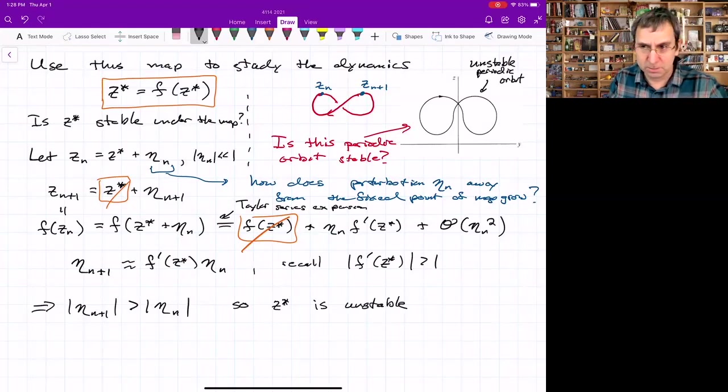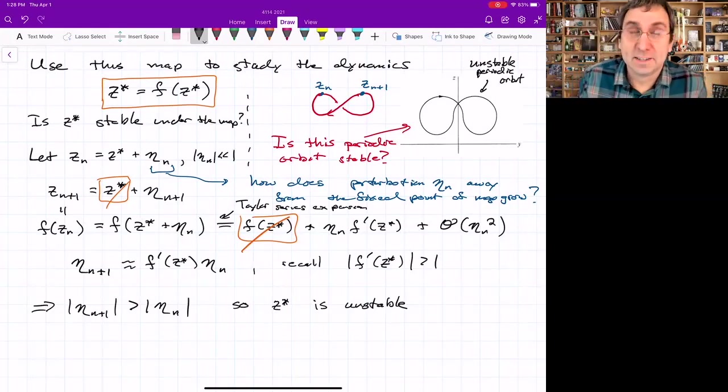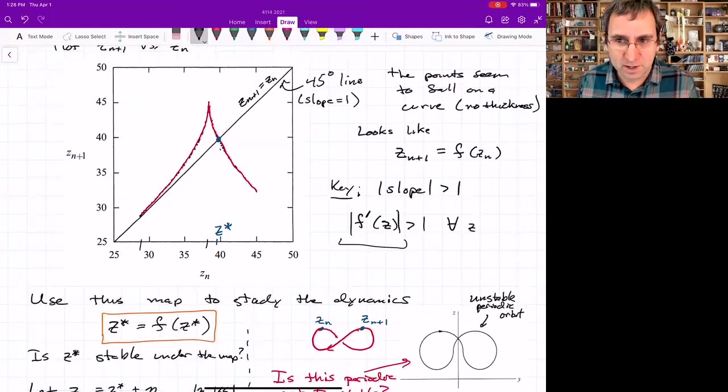And we get that from Z star is unstable. So at least in terms of the map, therefore, the periodic orbit is also unstable. So at least we know that's not stable. So the dynamics on the Lorenz attractor, at least they're not going to settle down to that. But you might say, well, maybe there's longer periods.